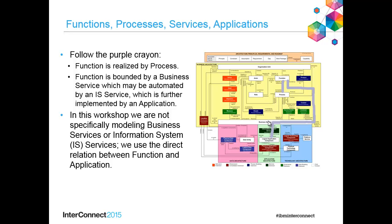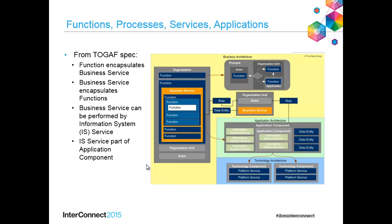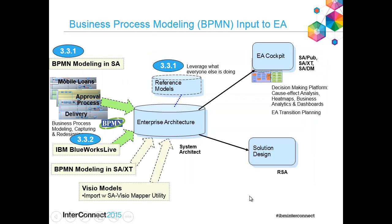Function is realized by a process, and function is bounded by a business service, which may be automated by an IS service, which is further implemented by an application — that's how to read the TOGAF metamodel. In this workshop we are modeling business services, not information services. There's wonderful information on the Open Group Architecture website describing how to build an enterprise architecture — functions encapsulate business services, which are performed by information services and applications, which use technology.